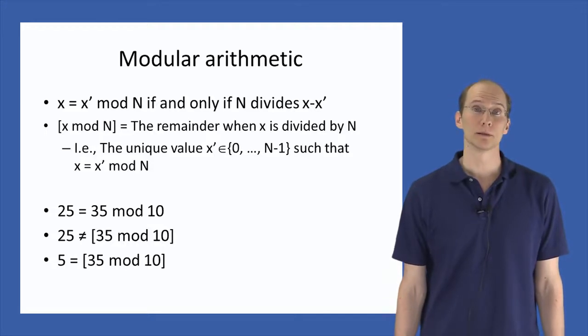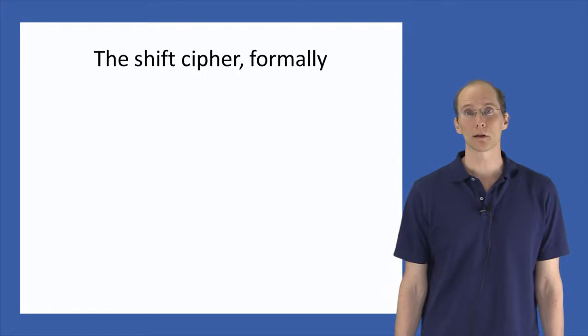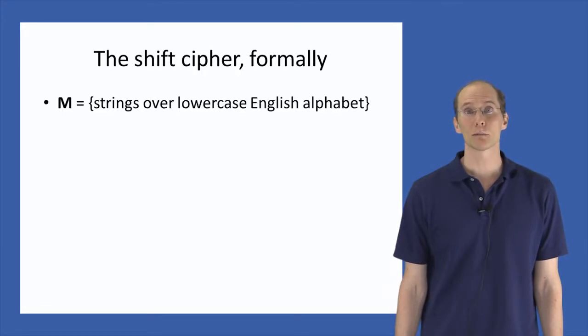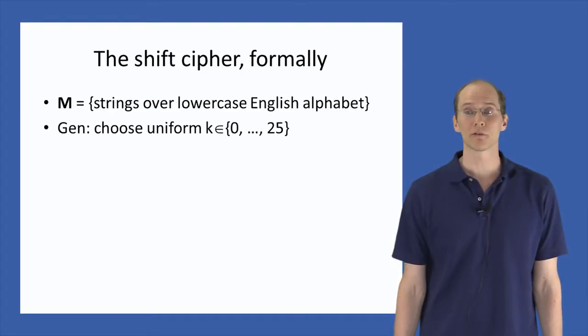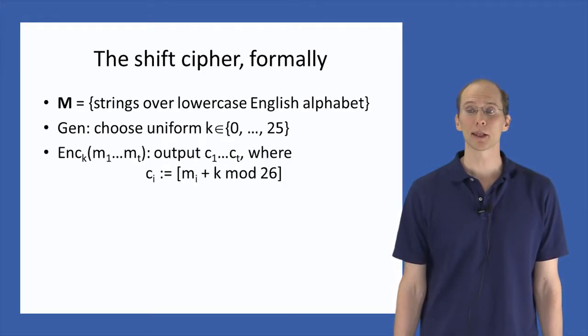Now we can define the shift cipher formally. The message space M will be the set of all strings over the lowercase English alphabet. Note that we do not handle uppercase letters, nor do we handle any non-alphabetic characters like numbers, spaces, or punctuation. Our key generation algorithm will choose a uniform key in the range from 0 to 25. This means that each value between 0 and 25 is chosen with equal probability. Now, to encrypt a message consisting of the characters m1 through mt using the key k, we output the ciphertext c1 through ct where each character ci is computed as mi plus k mod 26.